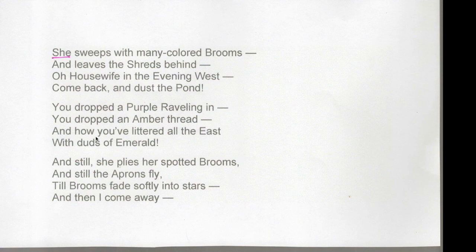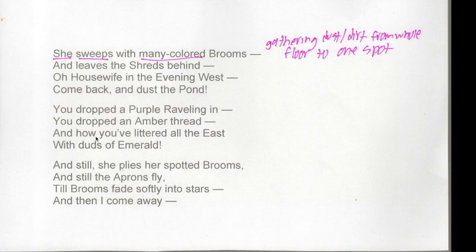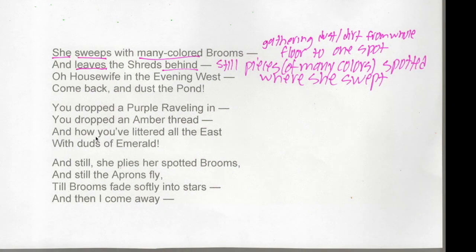So first, I noticed that there's a 'she' involved in this. I don't know who she is — it's not in first person, although at the end it does come to first person, so we know that's a different character. She sweeps with many colored brooms — this makes me think of somebody sweeping up a bunch of dust, gathering scattered colors into one spot. She leaves the shreds behind, which tells us there are still some pieces of the many colors spotted around where she already swept. So she didn't get everything.